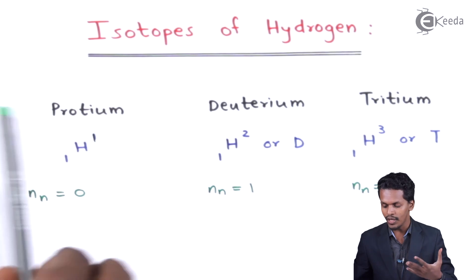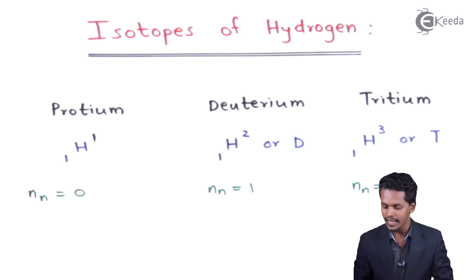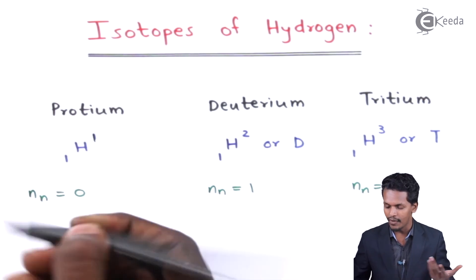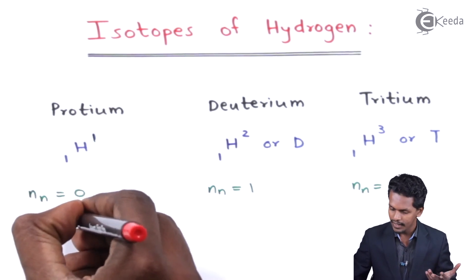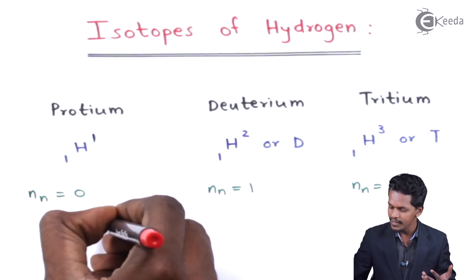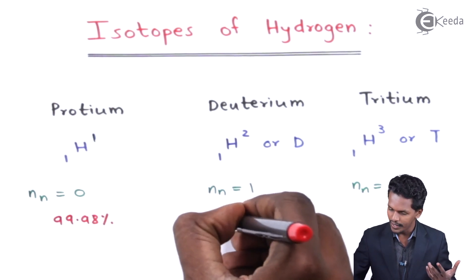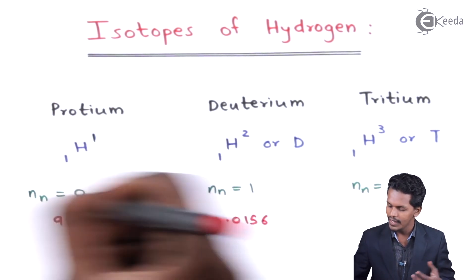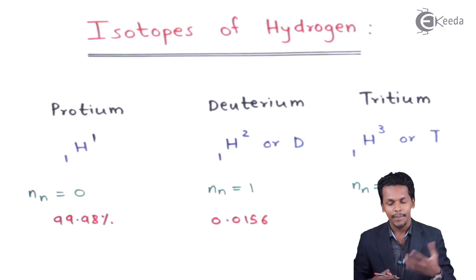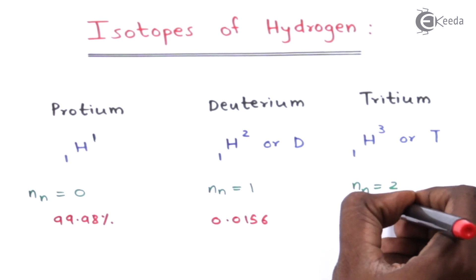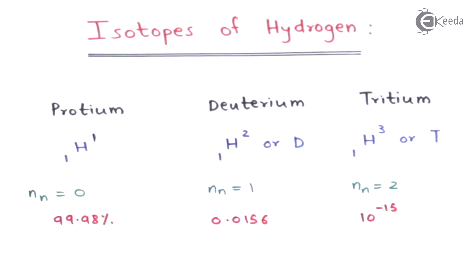Regarding natural abundance: protium (hydrogen) has an abundance of 99.98%, deuterium has an abundance of 0.0156%, and tritium has an extremely low abundance of approximately 10⁻¹⁵ percent.